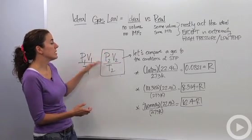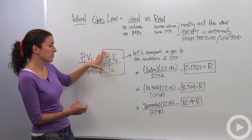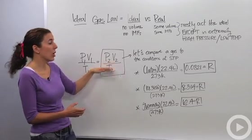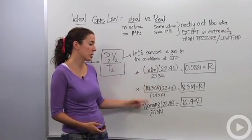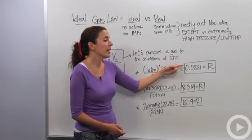But we like things in Kelvin because it's always positive that way. So if we were to replace one of these pressure times volume over temperature with our conditions at STP, we get a certain number. And depending on our pressure, whatever unit of pressure we're talking about, we get different numbers.